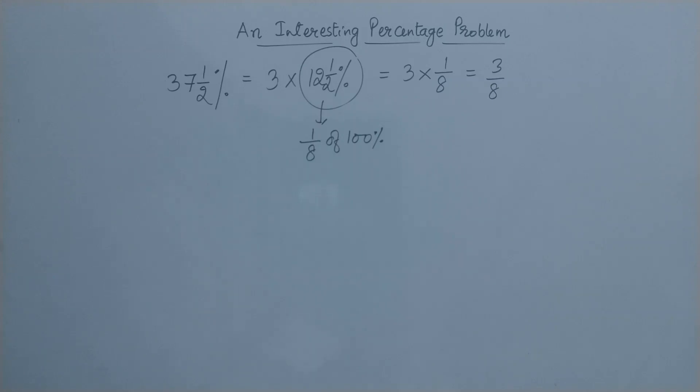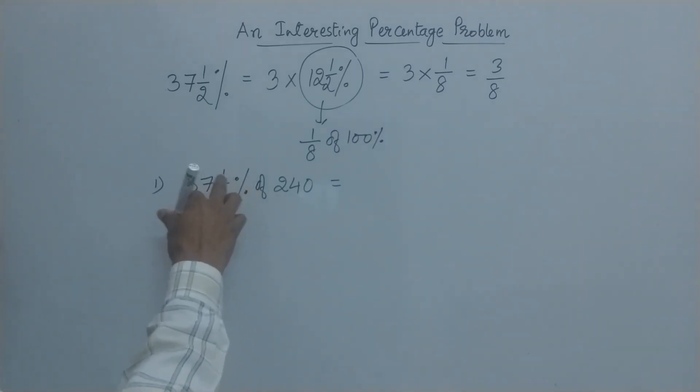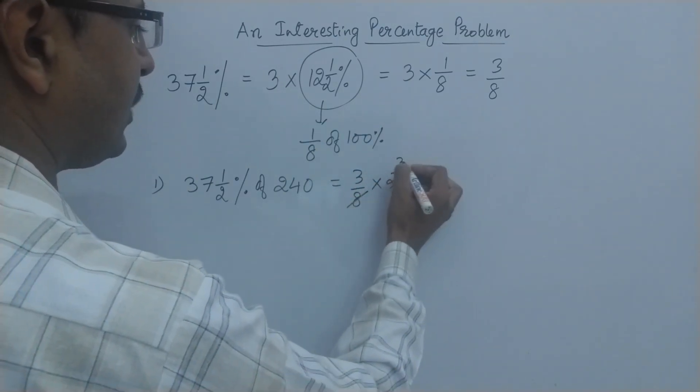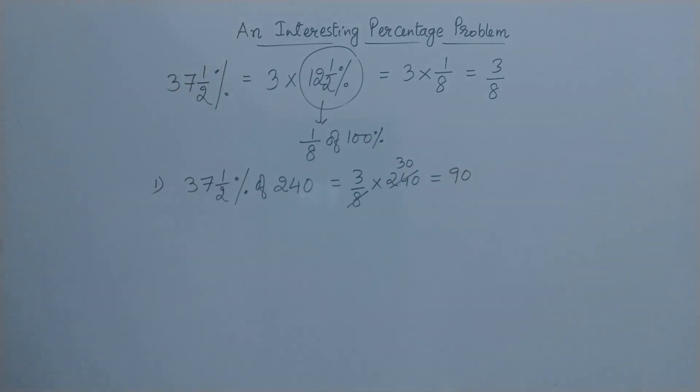Suppose we need to find 37.5% of 240. Then we don't need to convert this 37.5% by removing the mixed fraction, converting into proper fraction, and then removing the percentage sign and then multiplying. We can just solve 3/8 times 240, which will give us the required answer, that is 90. This is what happens when you have understanding of percentages as fractions.